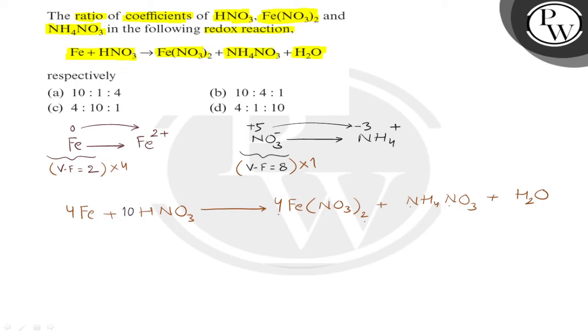4 H atoms have been consumed to form NH4NO3 and remaining 6 are present in water. Oxygen atoms have to be balanced. 3 twos are 6, 4 twos are 24, 3 and 36, 30, 10 into 3 is 30. The reaction is balanced.